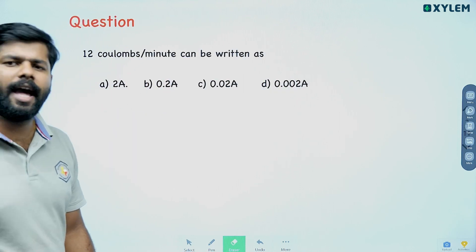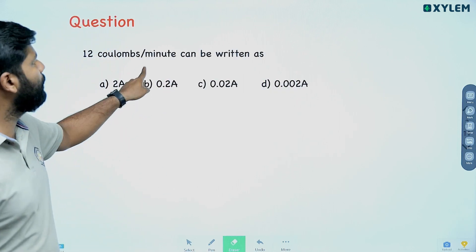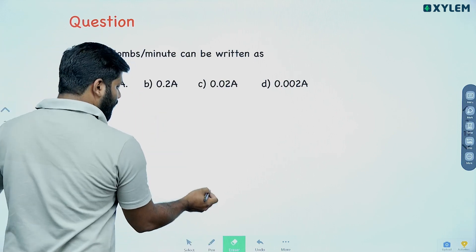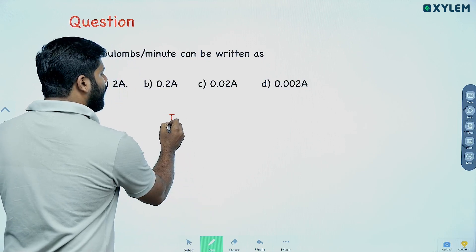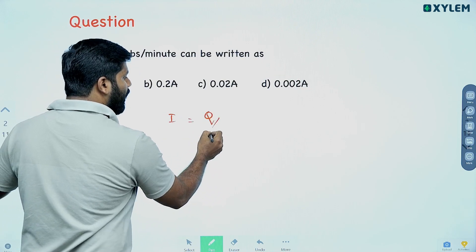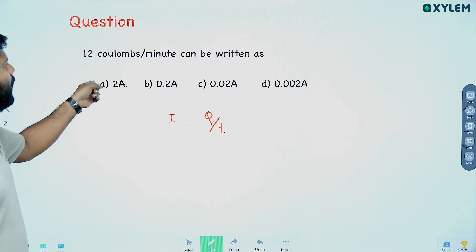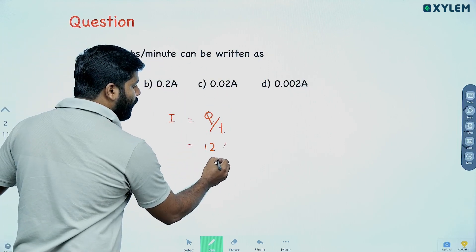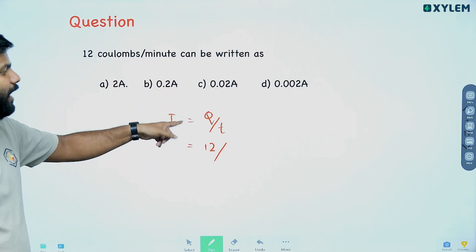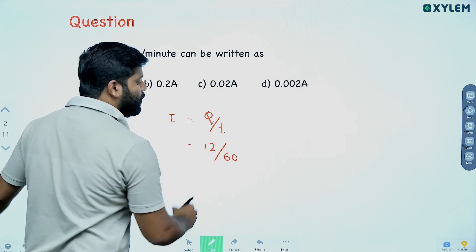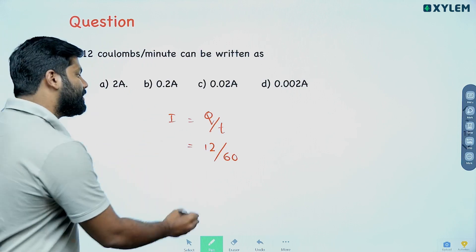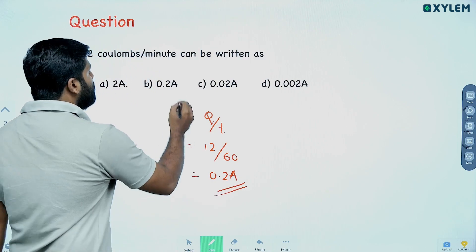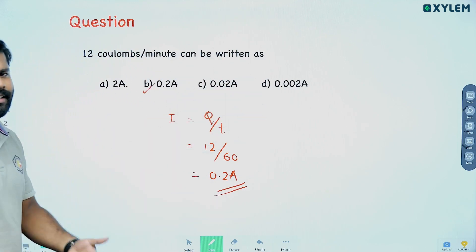12 coulombs per minute can be written using the current equation: I = Q/T. So 12 coulombs per minute is 12 divided by 60 seconds, which gives 0.2 amperes. So 0.2 is the answer — option B.